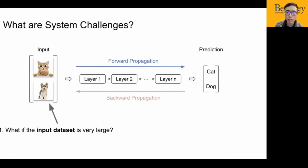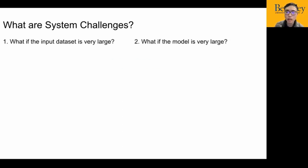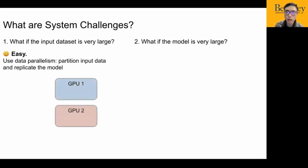The computation involves a forward propagation to compute the prediction, and a backward propagation to compute the gradients and update the model. Now, if we want to scale this training pattern, we face two problems. First, what if the input data is very large? For example, we want to train on millions of images. Second, what if the model or the layers are very large? For example, we want to train a model with billions of parameters. The difficulty of these two problems are different. The first problem is easy and has been well studied. It's called data parallelism. We can partition the input data and replicate the model.